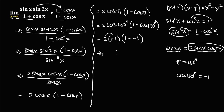Simplify: 2 times negative 1 is negative 2. Then 1 minus negative 1 gives a double negative, which is positive, and 1 plus 1 is 2. So the final answer is negative 2 times 2, which equals negative 4. Therefore, the limit of sin(x) times sin(2x) over 1 plus cosine(x) as x approaches pi is equal to negative 4.